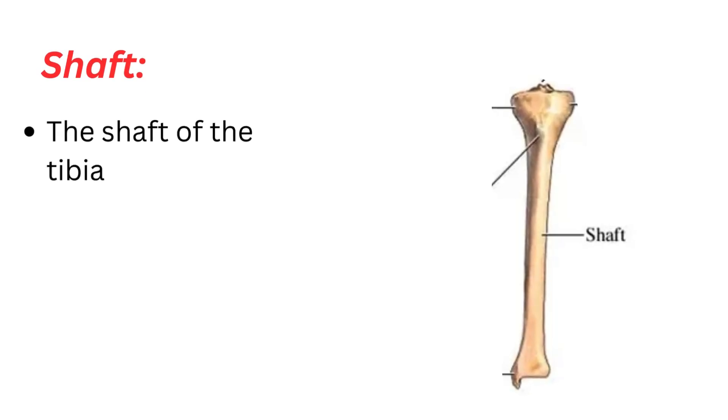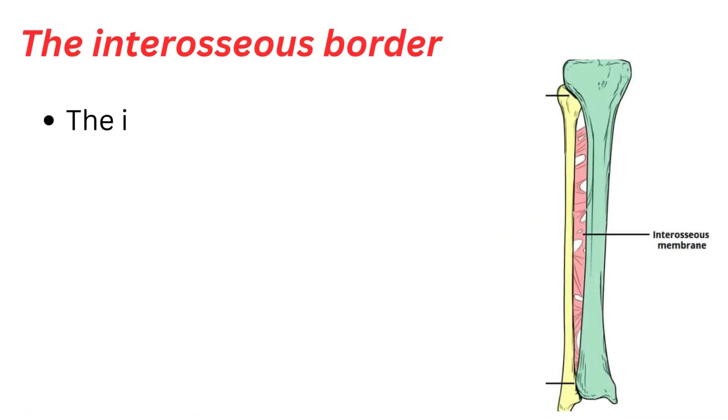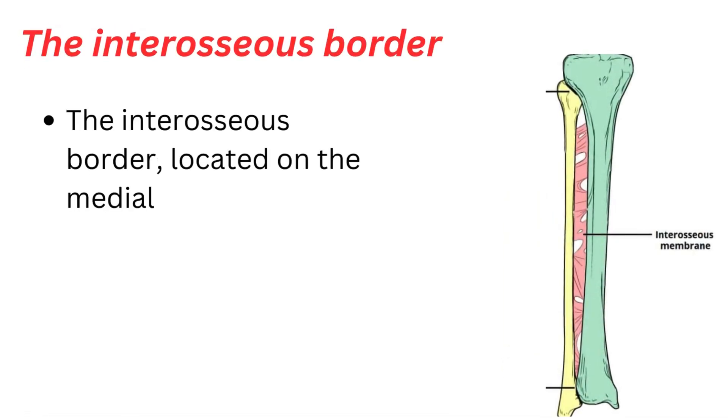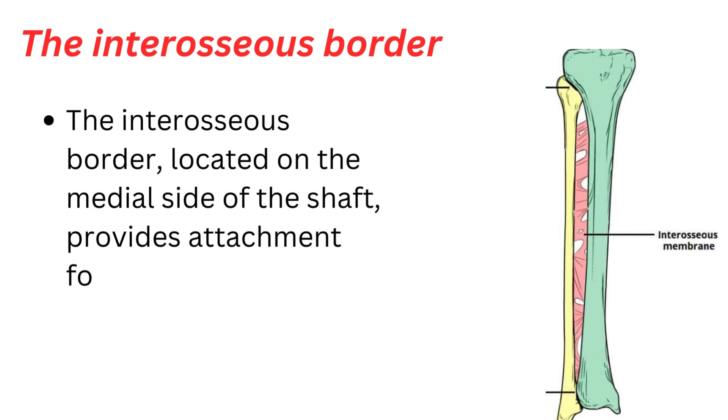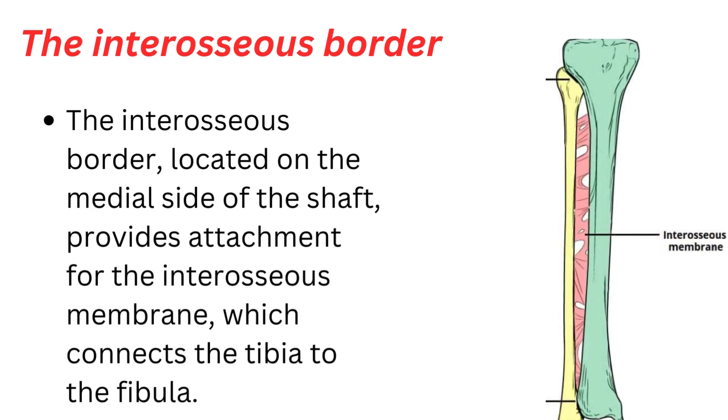Shaft: The shaft of the tibia is long and triangular in cross-section. The interosseous border, located on the medial side of the shaft, provides attachment for the interosseous membrane, which connects the tibia to the fibula.